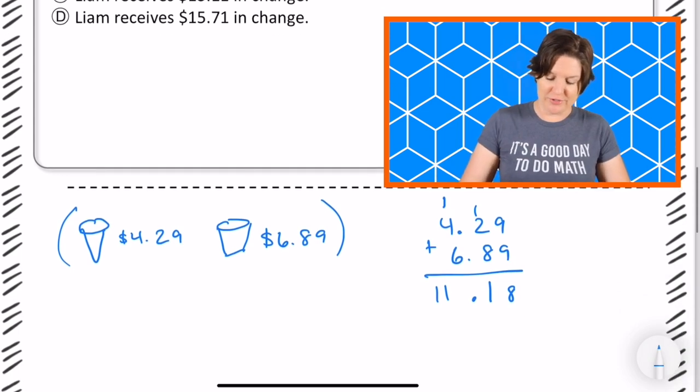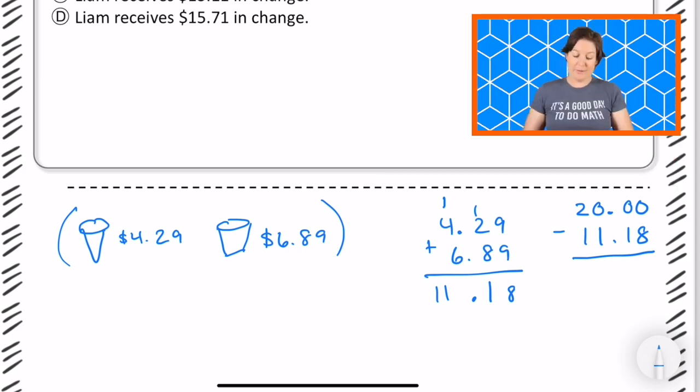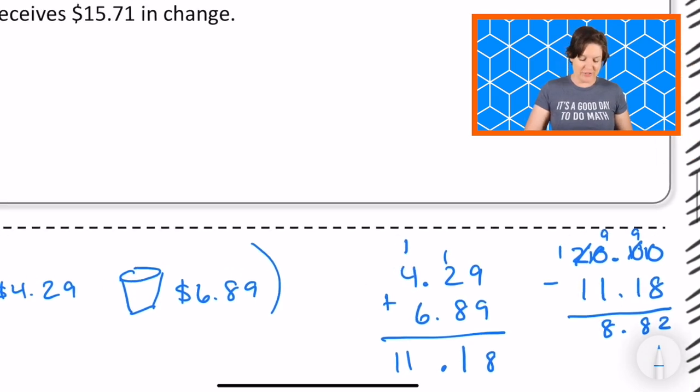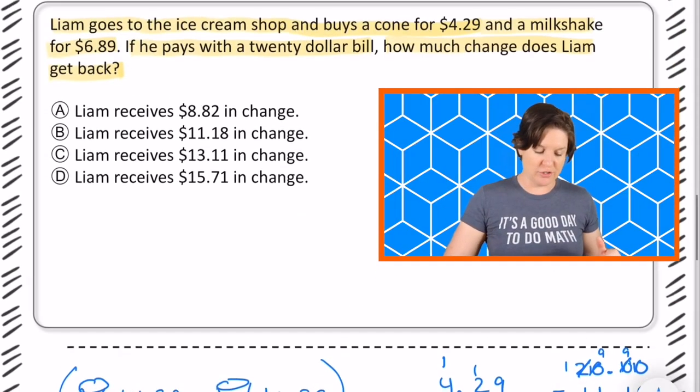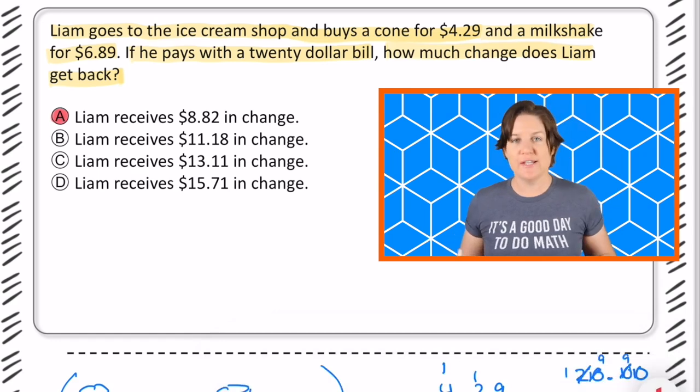Okay. So $20 can be written like this. Subtract our amount of $11.18. That's the cost of the cone and the milkshake. And we have quite a few zeros here, so I'm going to go ahead and regroup. Just like that. So 10 minus 8 is what? 2. 9 minus 1 is 8. Remember to bring down that decimal. 9 minus 1 is, nope it's not 7, it's 8, silly me. And 1 minus 1 is 0. So we have $8.82 in change. So the correct answer is right here. A. Liam receives $8.82 in change.